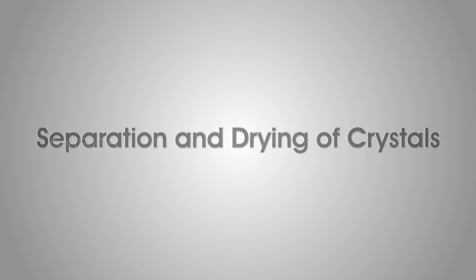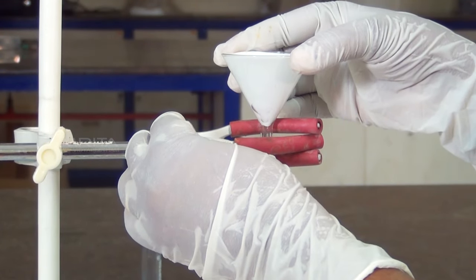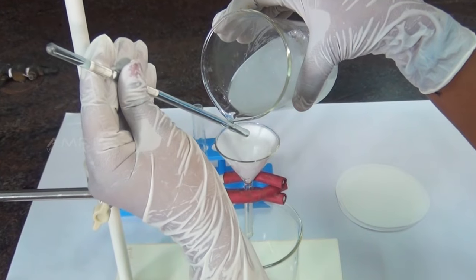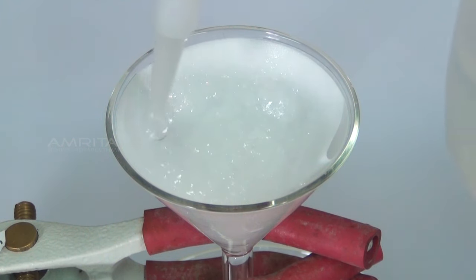Separation and drying of crystals. Clamp the funnel in which a filter paper is fixed to the stand. Place a beaker under the funnel and separate the crystals by filtration. Wash the crystals with cold water.